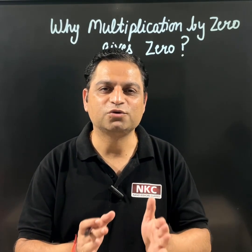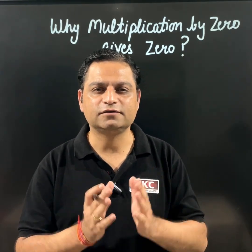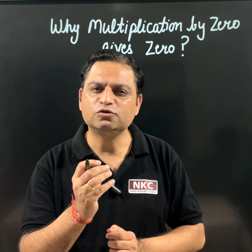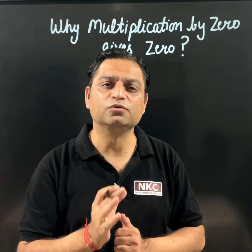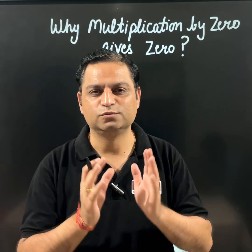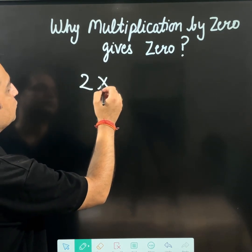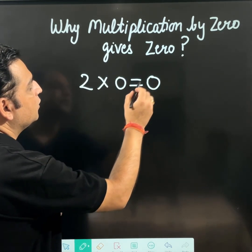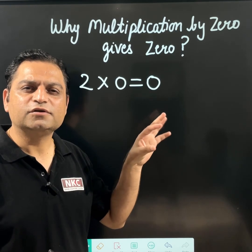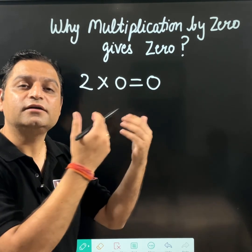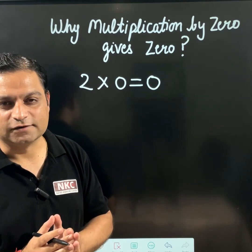Hello friends, welcome to Nandakishore classes. Today's lecture is going to be very interesting. Today we are going to understand why multiplication of any number with 0 gives result 0. For example, 2 multiply 0 is equal to 0. Many students get confused because they don't know why the answer is 0. So we are going to clarify this concept today.